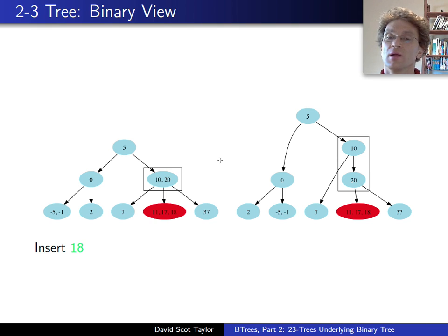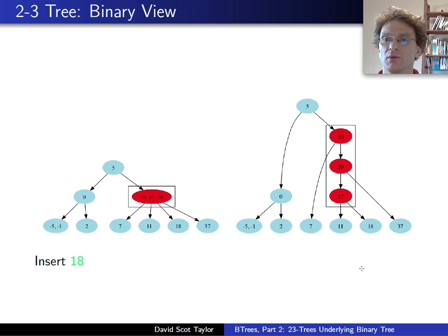So what happens? I want to insert that 18. 18 makes my leaf too big. What happens? When a leaf gets too big, it splits apart. The center value, 17, moves up to the parent, and 18 and 17 split apart. Now in this case, the 17 moved up. I'll just sort of temporarily put it into this node, and I know that the 17 keeps the 11 and the 18 apart from each other, it splits them.